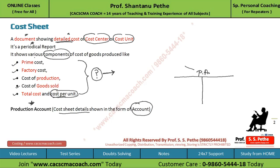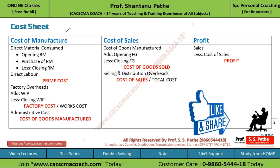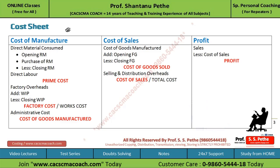We will talk about the production account in detail later. For better understanding of the cost sheet, I have divided the cost sheet items into three parts: first is cost of manufacture, second is cost of sales, and third is profit.